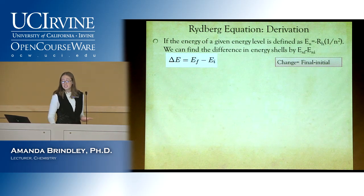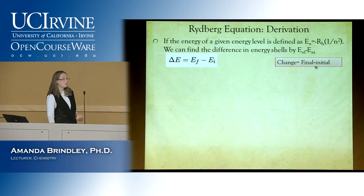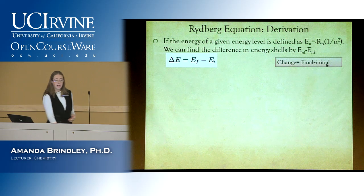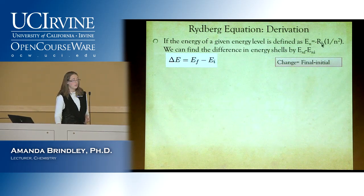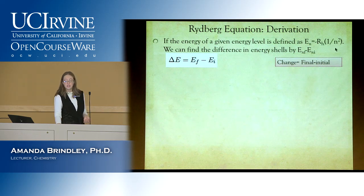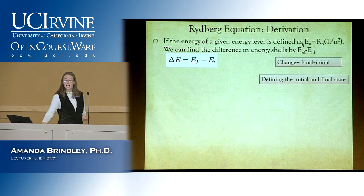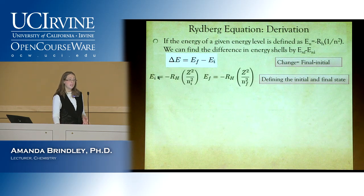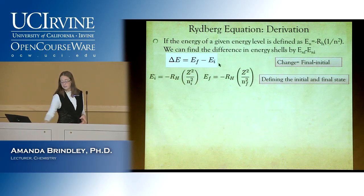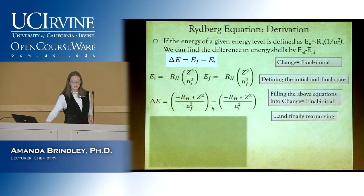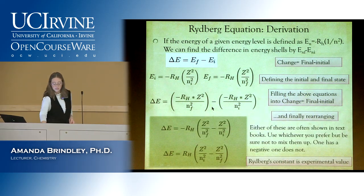To do that, we did the same thing we do for a change in anything: we took our final and subtracted our initial. We don't have actual values, but we have equations. The Rydberg constant times one over z squared, depending on if it's not hydrogen, over whatever energy level you're talking about equals the energy level. We write this out for the initial and final energy levels, fill those in, do a little algebra, and end up with one of these two forms.